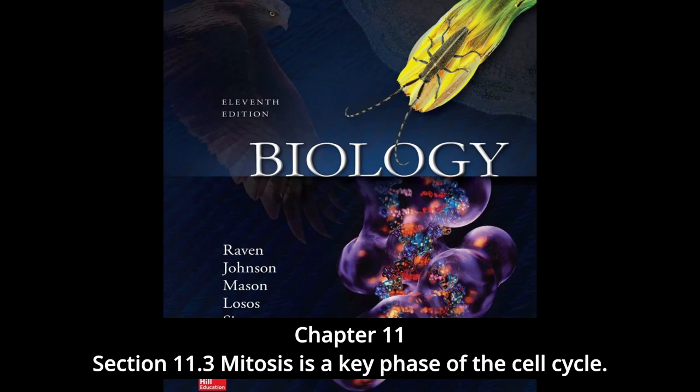The time it takes to complete a cell cycle varies greatly among organisms. Cells in growing embryos can complete their cell cycle in under 20 minutes. The shortest known animal nuclear division cycles occur in fruit fly embryos — eight minutes. These cells simply divide their nuclei as quickly as they can replicate their DNA, without cell growth; half of the cycle is taken up by S, half by M, and essentially none by G1 or G2.